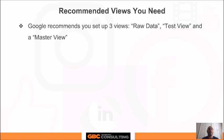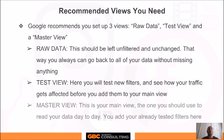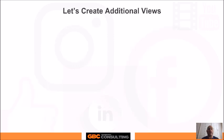Google recommends you set up three views: raw data, test view, and a master view. Raw data should be left unfiltered and unchanged so you can always go back to all your data without missing anything. Test view is where you test new filters and see how your traffic gets affected before adding them to your main view. Master view is your main view — the one you should use to read your data day-to-day. You add your already tested filters here in master view.